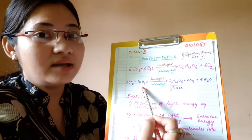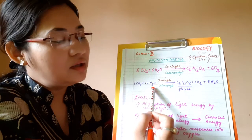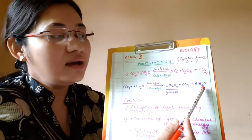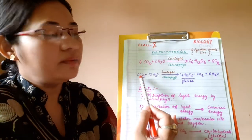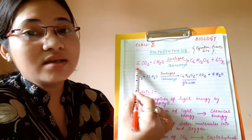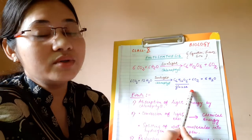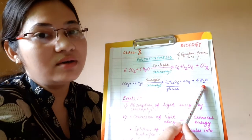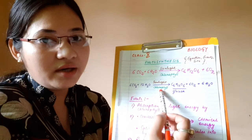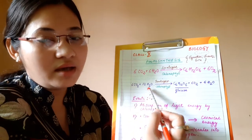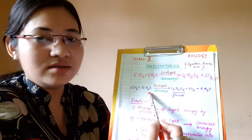A question may come: for the formation of one molecule of glucose, how many molecules of carbon dioxide are required? Six molecules of carbon dioxide are required for producing one molecule of glucose, whereas six molecules of oxygen and six molecules of water are generated during this process. So photosynthesis is the process in which green plants, in the presence of sunlight, combine carbon dioxide and water to produce glucose and oxygen. This is the balanced equation for photosynthesis.